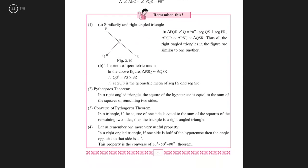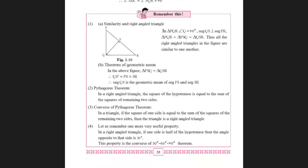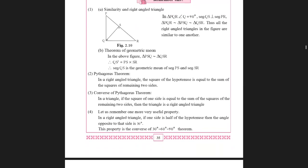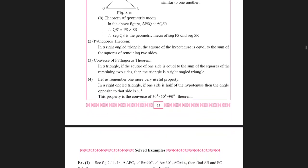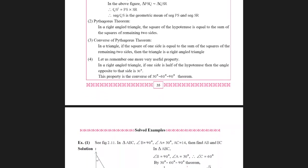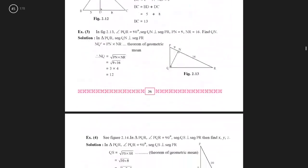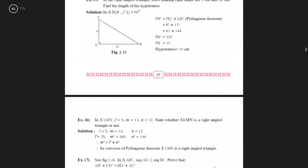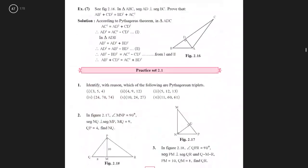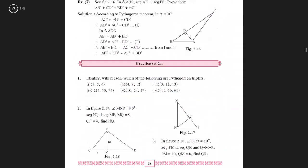As a summary of what we have covered: similarity of right angle triangles, theorem of geometric mean, Pythagoras theorem, its converse, and the 30-60-90 degree triangle properties. We have finished with the key theorems before starting with the exercise.